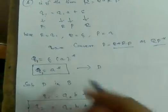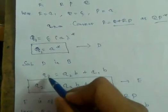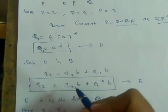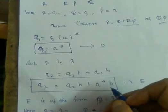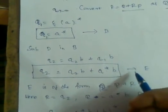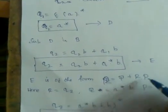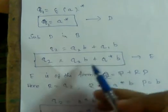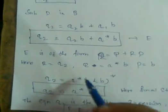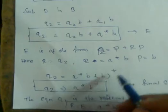Now we substitute D into equation B. Equation B is q2 = q2·b + q1·b. Substituting q1 = a*, we get q2 = q2·b + a*·b. This is again of the form r = q + r·p, where q is a*·b and p is b. Applying Arden's lemma, q2 = a*·b·b* = a*·b+.